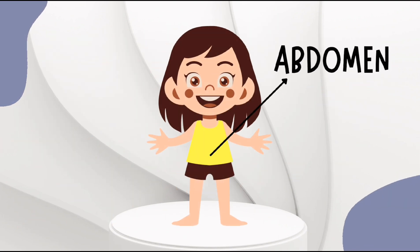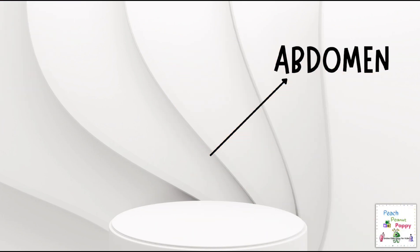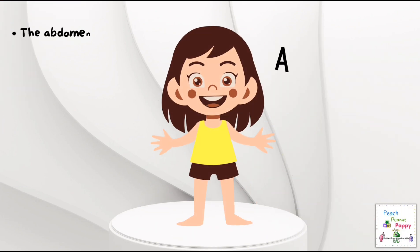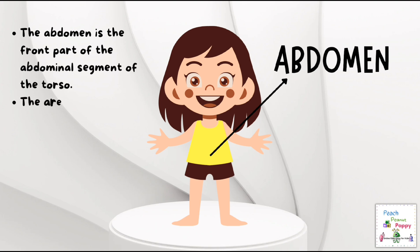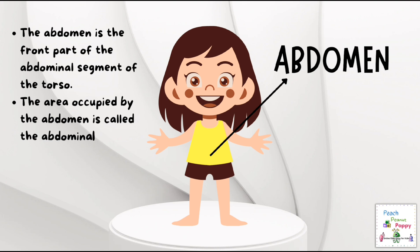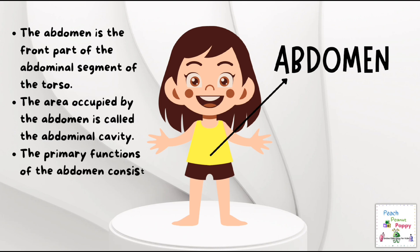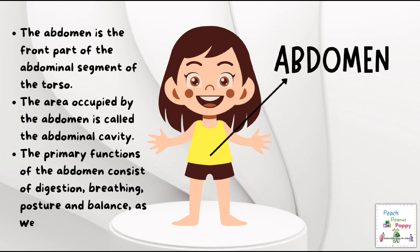Next we have the abdomen. The abdomen is the front part of the abdominal segment of the torso. The area occupied by the abdomen is called the abdominal cavity. The primary functions of the abdomen consist of digestion, breathing, posture and balance, as well as movement.